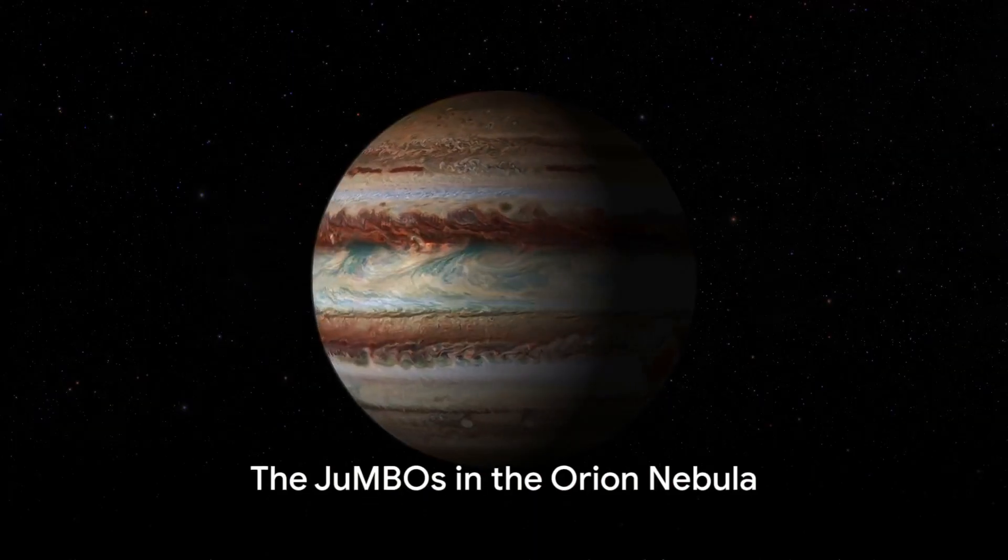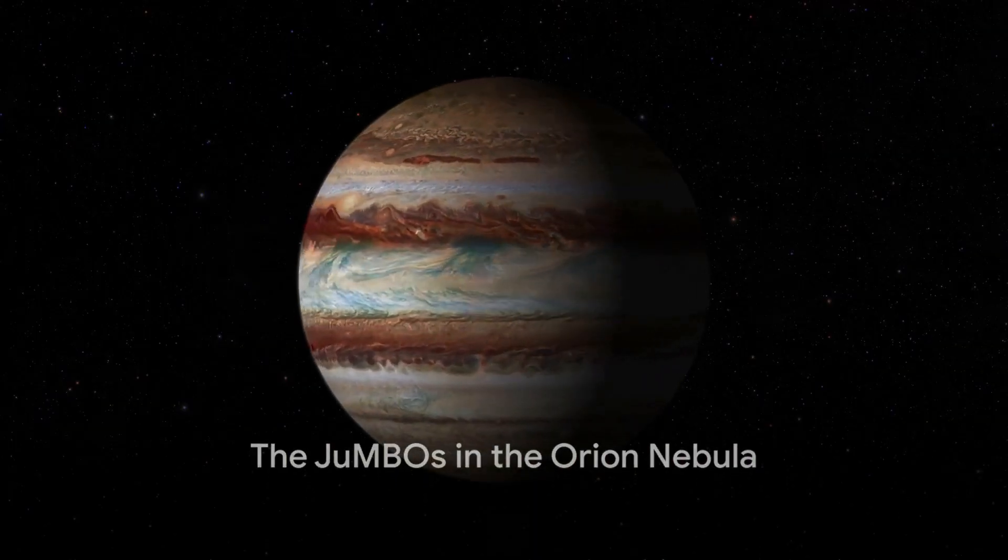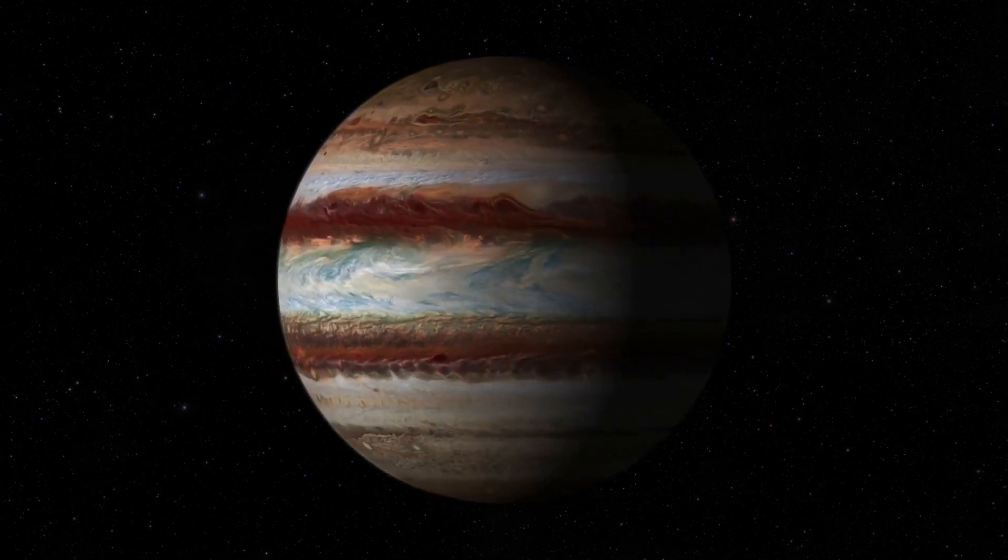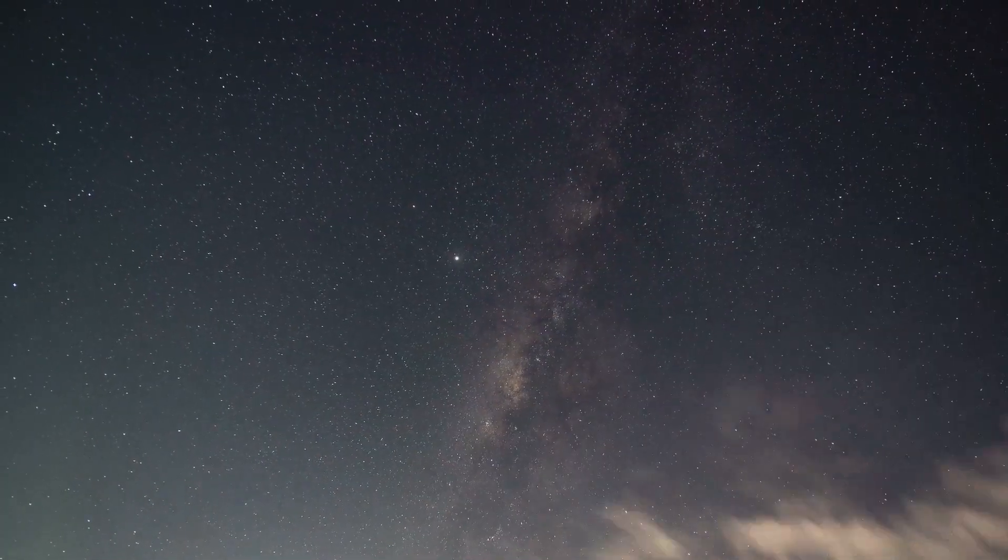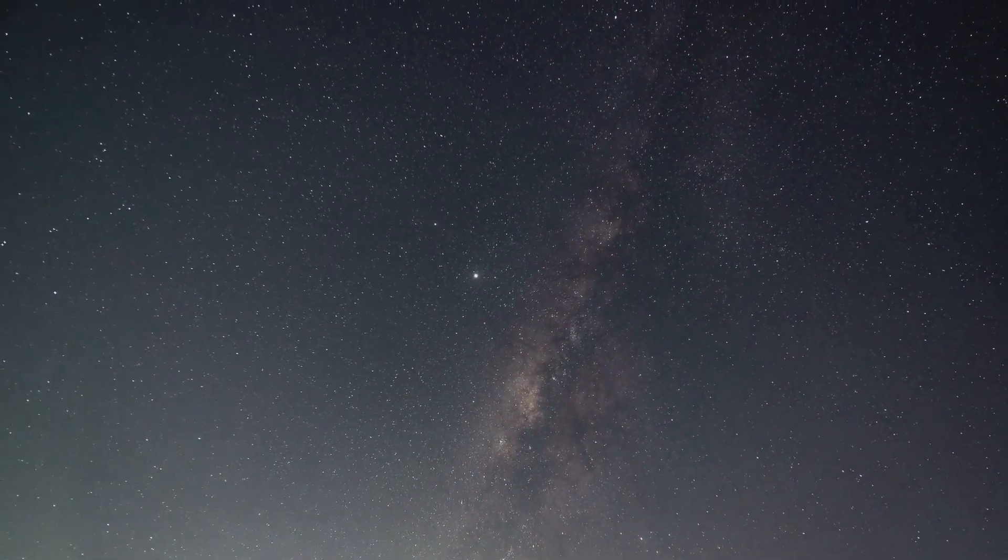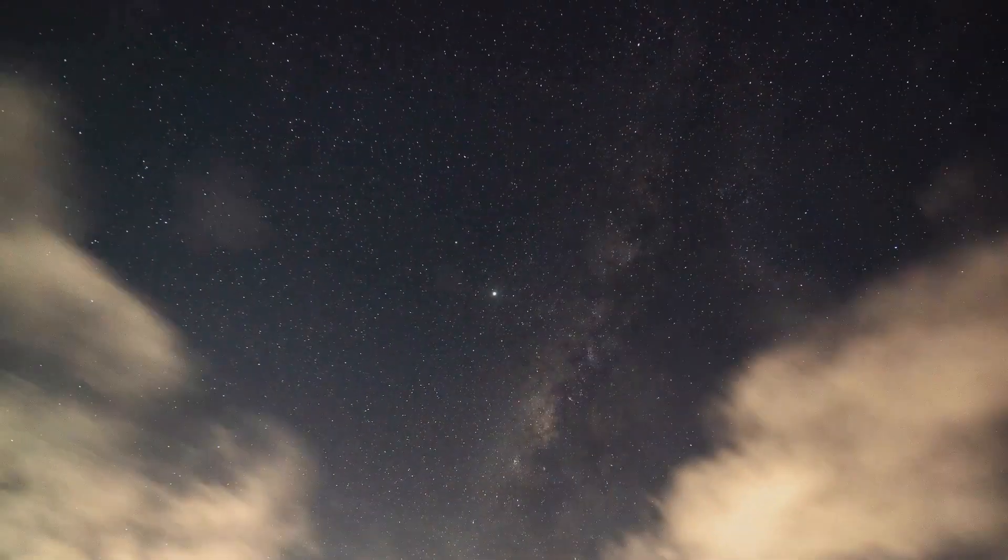Meet the jumbos. No, not the large elephants from the African plains, but Jupiter-sized planets that are meandering freely in the cosmos, unattached to any star. A strange sight indeed, as planets are generally found orbiting stars, not wandering aimlessly in the vast expanse of space.